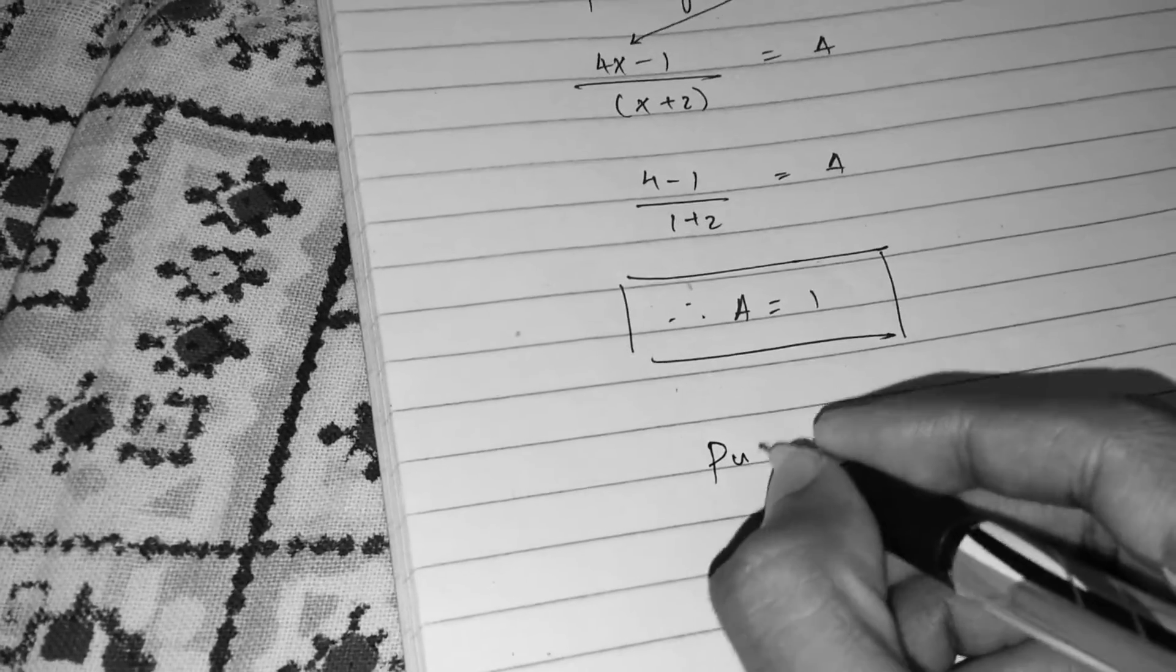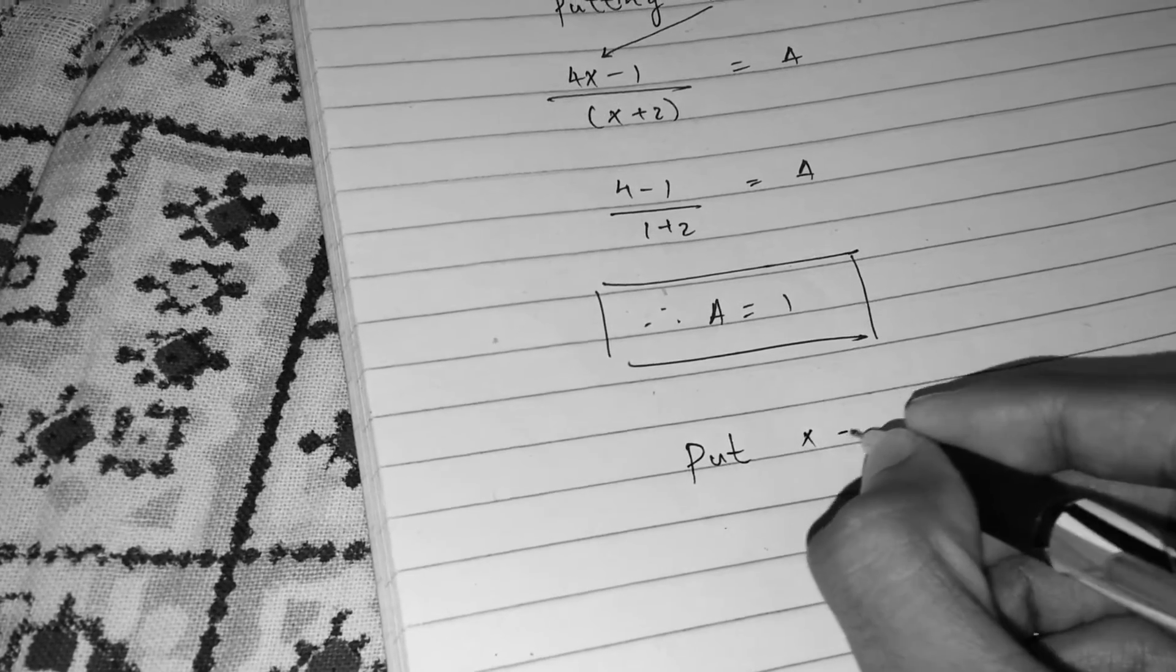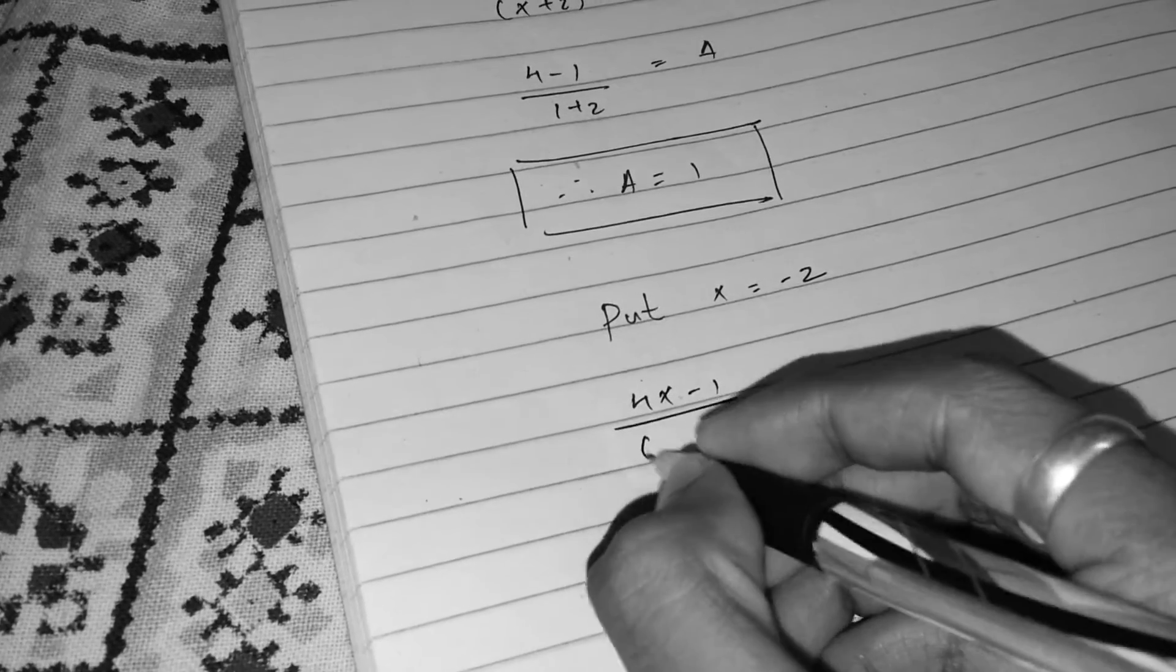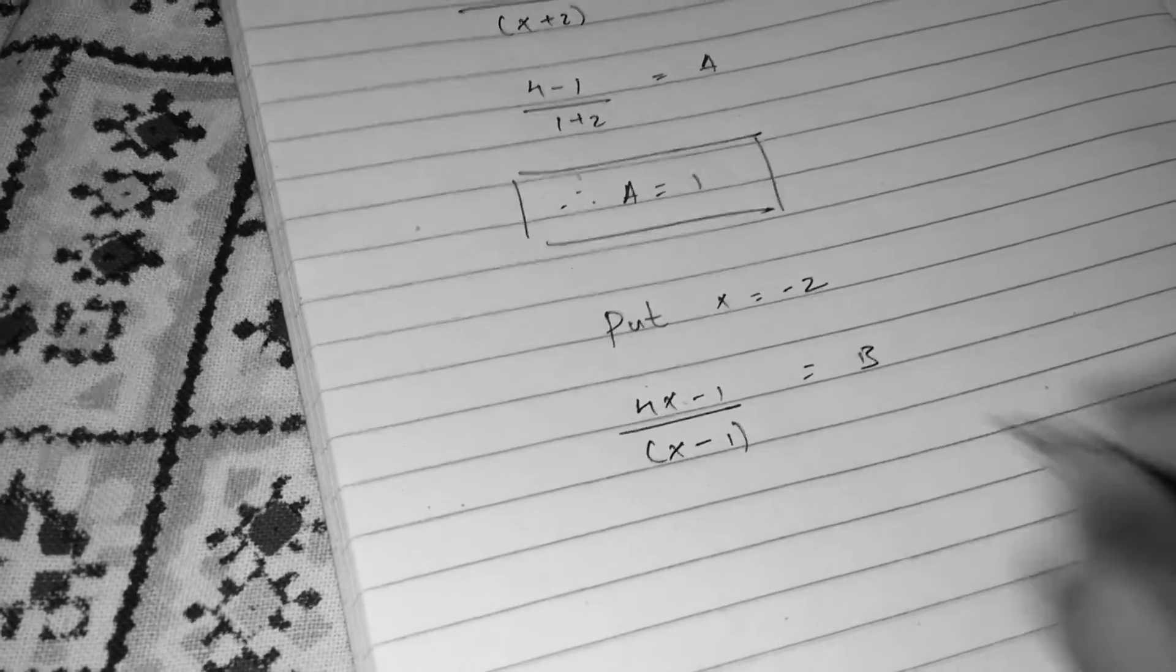So let's put x is equal to minus 2. 4x minus 1 over x minus 1 is equal to B.